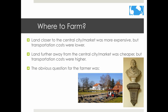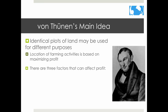A lot of the model is based on the cost of land and transportation. Land closer to the city market was more expensive but transportation costs were lower; land further away was cheaper but transportation costs were higher. Von Thünen's main idea was that if you have an identical plot of land with no change in soil, farmers will choose the activity that makes the greatest profit. Three factors affect profit: transportation costs, price of land, and proximity to market — especially to prevent spoiling food.